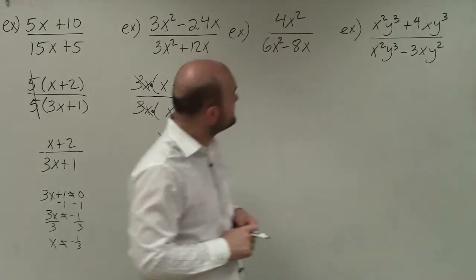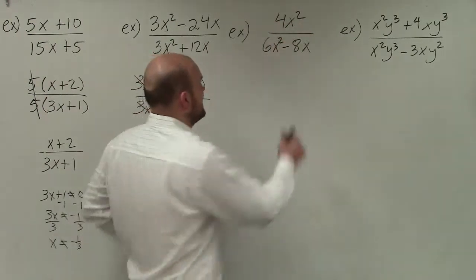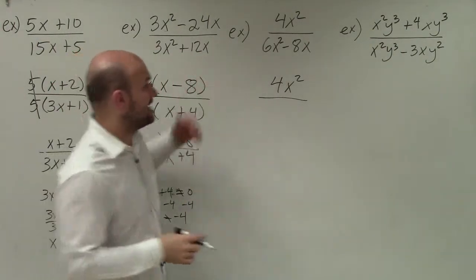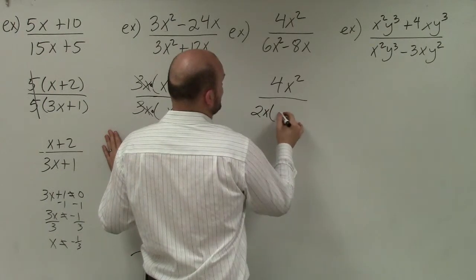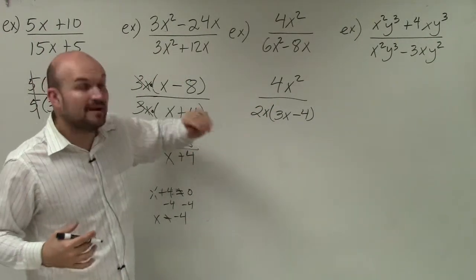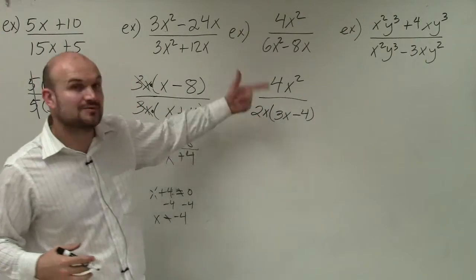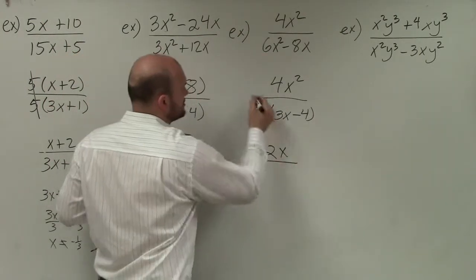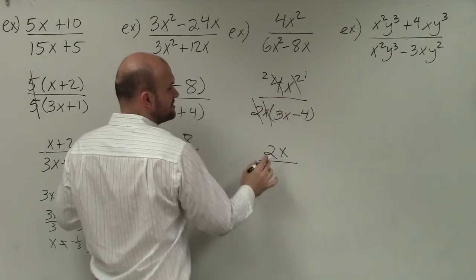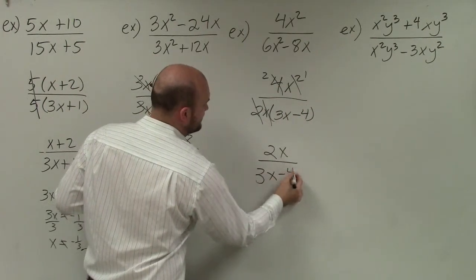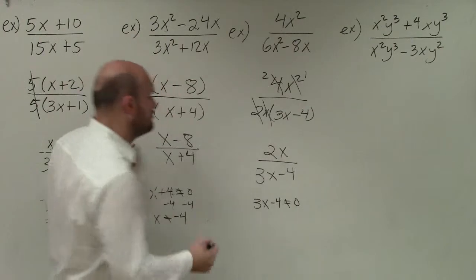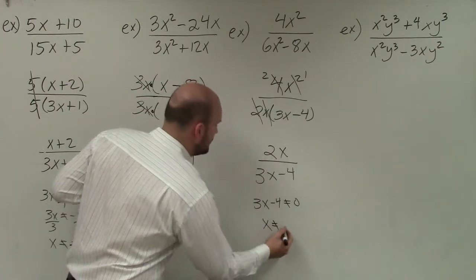In the third example, the numerator is just 4x squared — I can't factor anything out, so I leave that as is. However, in the denominator, both terms share a 2 and an x, so I factor out a 2x and I'm left with 3x minus 4. Now I can divide 4 over 2, and by the rules of exponents, x squared over x leaves me with x. So I get 2x in the numerator over 3x minus 4. By the constraint, 3x minus 4 cannot equal 0, so x cannot equal positive 4 thirds.